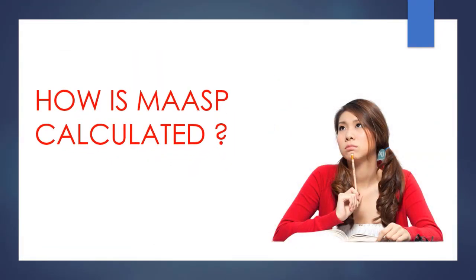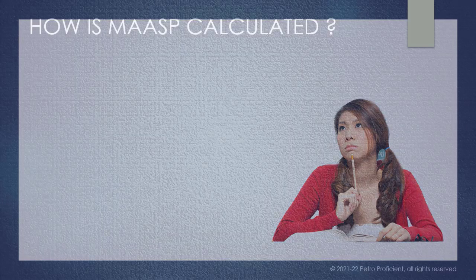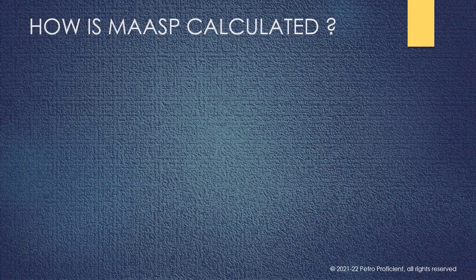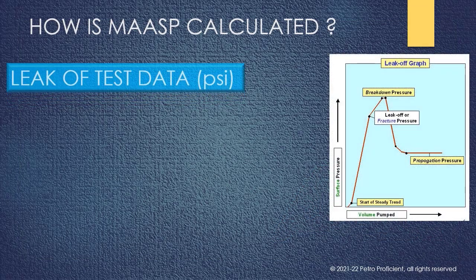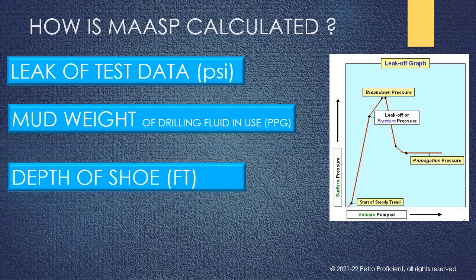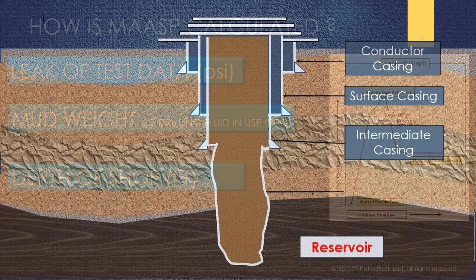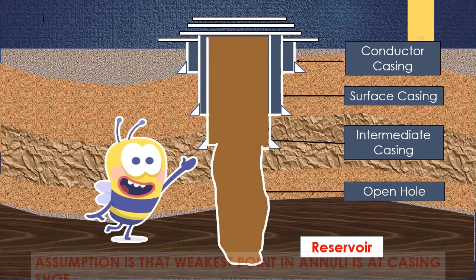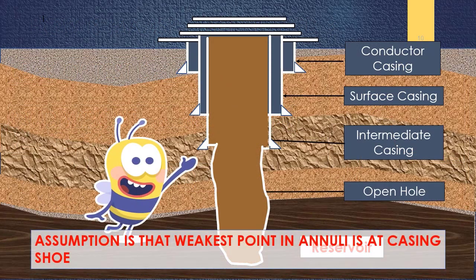How is MASP calculated? MASP is calculated with leak-off test data. We also need to know the mud weight and depth of casing shoe. Note that the assumption is the weakest point in the annulus is at the casing shoe.